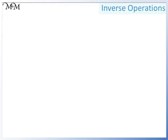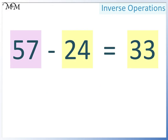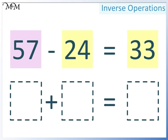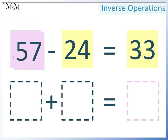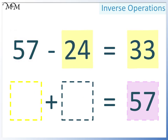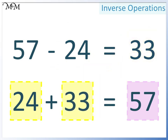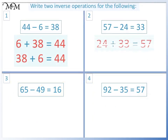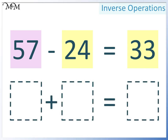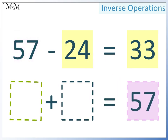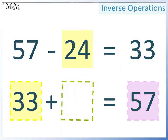Question 2. We are writing an addition, so the largest number must go here. In this space we can have either of the two smaller numbers, so we will move 24 here and 33 here. The second way we could write this is to again write the largest number here. In this space we'll use the other smaller number, so 33 will go here and 24 will go here. 33 add 24 equals 57.